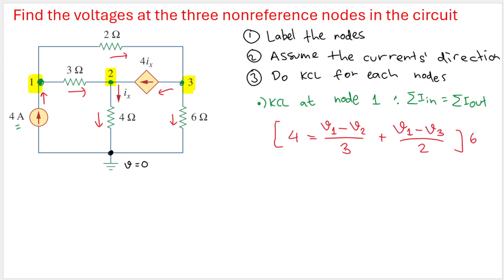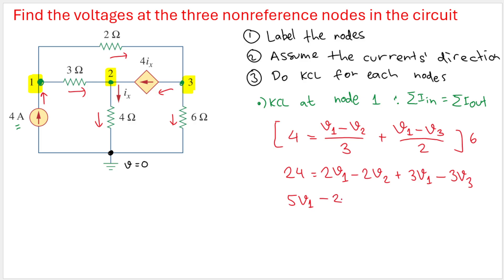Multiplying both sides by 6 to clear the denominators: on the left we get 24; on the right, 3 and 6 cancel to give 2V1 - 2V2, and 2 and 6 cancel to give 3V1 - 3V3. Combining like terms: 5V1 - 2V2 - 3V3 = 24. This is equation number 1.